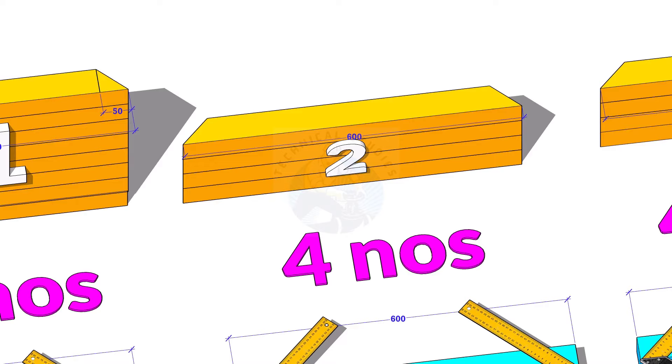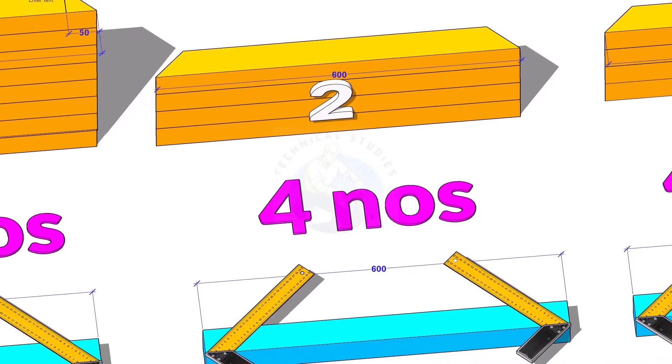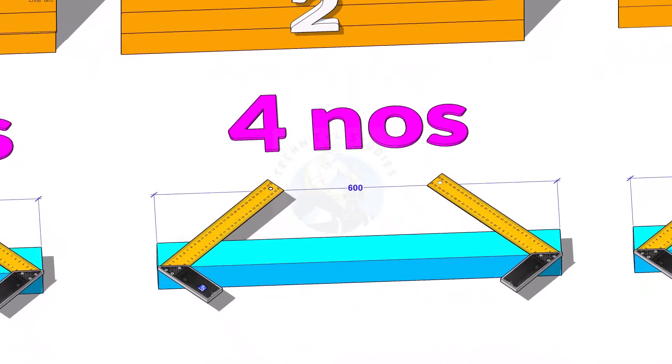Item number two is also 500 millimeters long. Cut 45-degree notch on both ends.